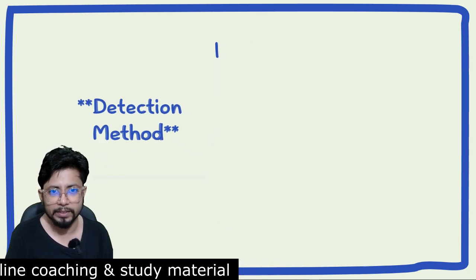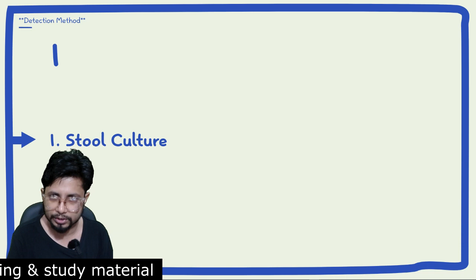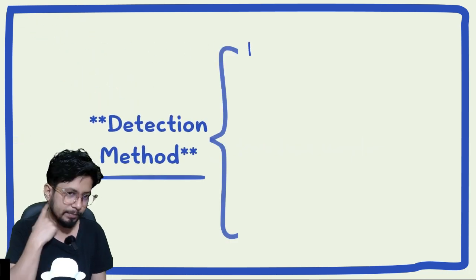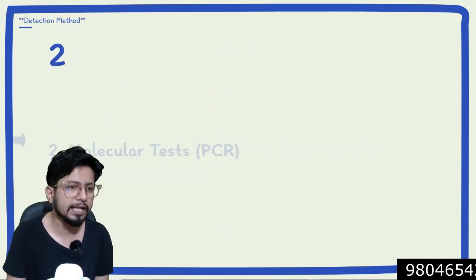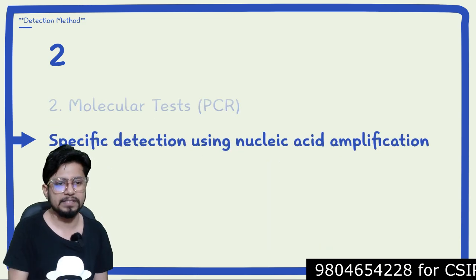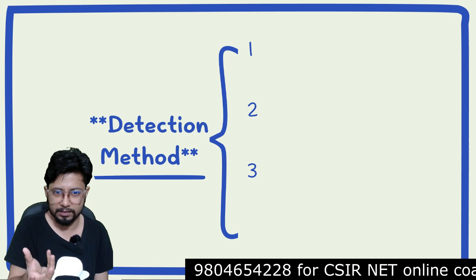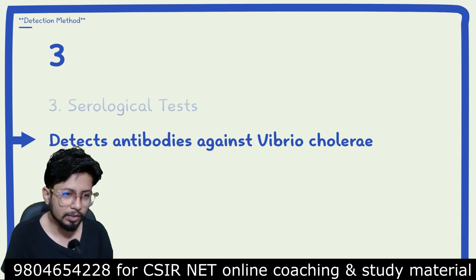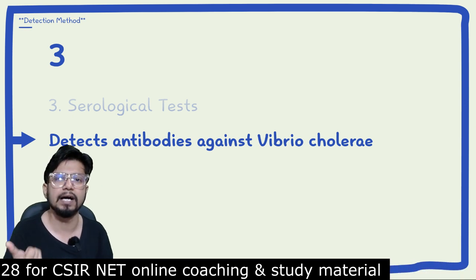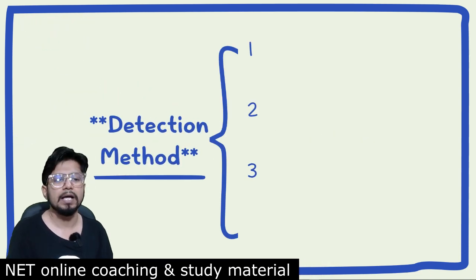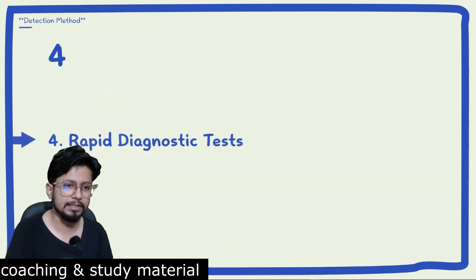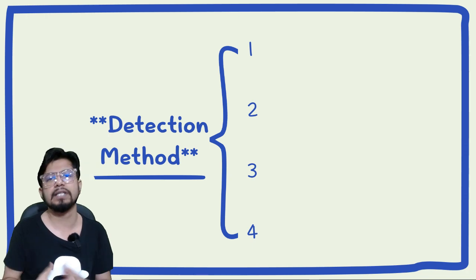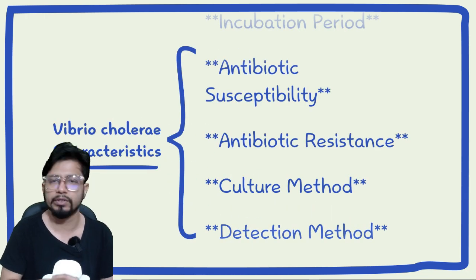There are four detection methods for Vibrio cholerae. Method one is stool cultures, which can isolate Vibrio cholerae from fecal samples. The second method is molecular tests or PCR, which specifically detect the nucleic acid of Vibrio cholerae. The third is serological tests, which detect antibodies produced by the body against Vibrio cholerae. The fourth is rapid diagnostic tests, which can detect cholera toxin in stool samples.